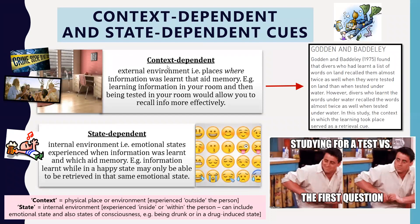A context dependent cue is never about the person — it relates to the surroundings where they learned or experienced something. The Godden and Baddeley study, while not in the study design, is a well-known example of how context dependent cues affect memory and appears in virtually every psychology textbook.